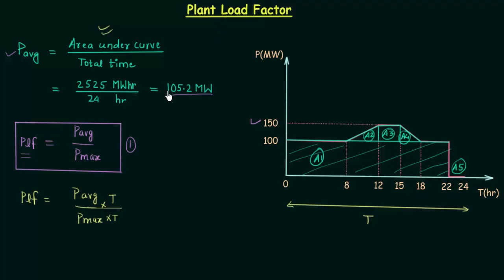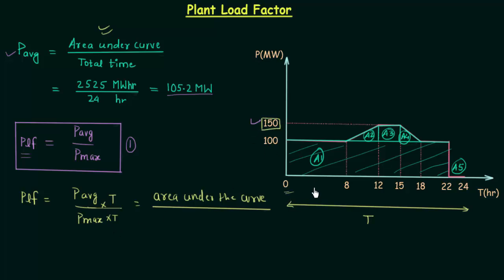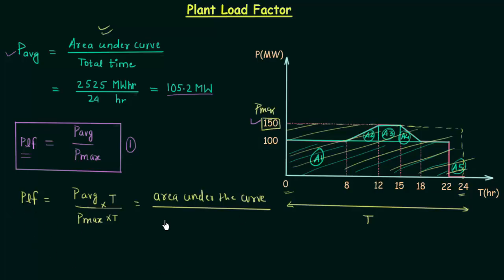The area under the curve is equal to P average multiplied with the total time. We already know the area under the curve — it is equal to 2525 MWh. So the numerator is the area under the curve, and in the denominator we have P max multiplied with T. P max is 150 and T is from 0 to 24, so you have to find out this rectangular area corresponding to P max. Therefore, plant load factor equals area under the curve over rectangular area corresponding to P max.